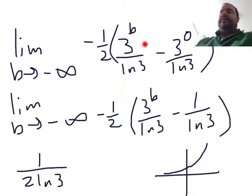Alright, so I've plugged in b and 0, and now I'm specifically thinking about the limit of this first term. And ln of 3 and minus 1 half are constants. I'm really just focused on 3 to the b.